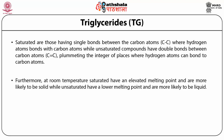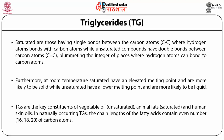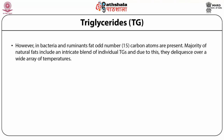At room temperature, saturated triglycerides have an elevated melting point and are more likely to be solid, while unsaturated triglycerides have a lower melting point and are more likely to be liquid. Triglycerides are the key constituent of vegetable oil (unsaturated form) and animal fats (saturated form), and are also present in human skin oils. In naturally occurring triglycerides, chain lengths of fatty acids typically contain even numbers of carbon atoms — either 16, 18, or 20 — though in bacteria and ruminant fats, odd numbers of carbon atoms are also present.